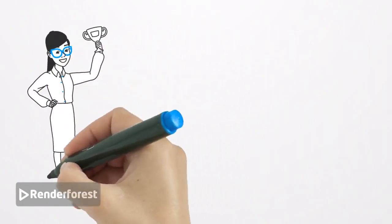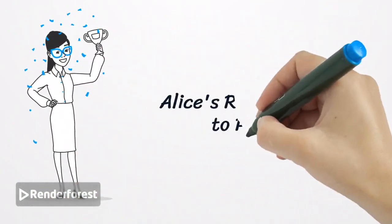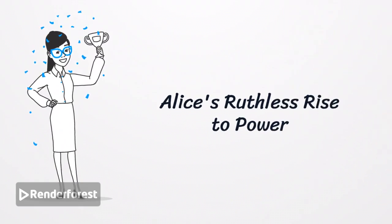With time, Alice ascended to the throne of Eldoria, overthrowing the previous ruler with a display of power that sent tremors through the very foundations of the kingdom.